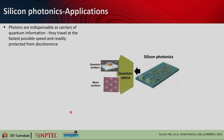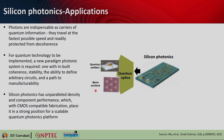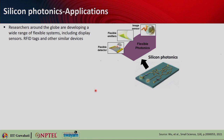In the quantum optics area, photons are indispensable as carriers of quantum information — traveling at the fastest possible speed and readily protected from decoherence. For quantum technology implementation, a new paradigm photonic system is required, built with coherence, stability, and the ability to define arbitrary circuits with a path towards manufacturability. Silicon photonics offers unparalleled density and component performance with CMOS-compatible fabrication, placing it in a strong position for scalable quantum photonics platforms.